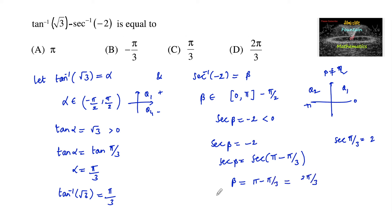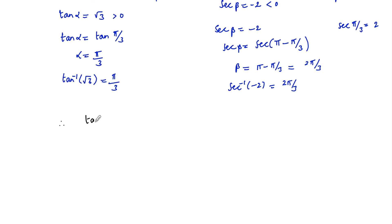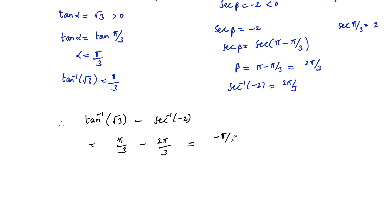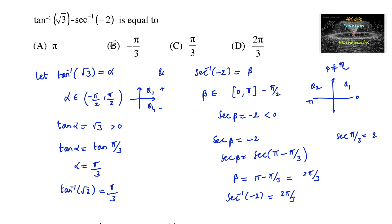So secant inverse of negative 2 equals 2 pi by 3. Therefore, tan inverse of root 3 minus secant inverse of negative 2 equals pi by 3 minus 2 pi by 3, which gives minus pi by 3. So minus pi by 3 is the answer, which is option B.